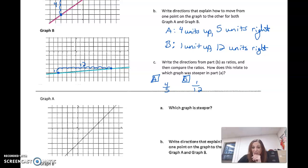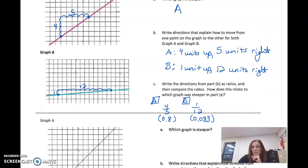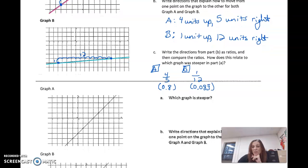So let's talk about these ratios again. A is four units up, five units right. B is one unit up, 12 units right. Now, if I just did this on a calculator, if I divided four by five, that would be 0.8. If I divided one by 12, I would get 0.083 repeating. So obviously 0.8 is bigger. So that's graph A. Notice that we said that was steeper too. So same thing here. Graph A is steeper and has the greater ratio again of up to right.